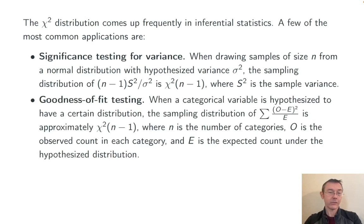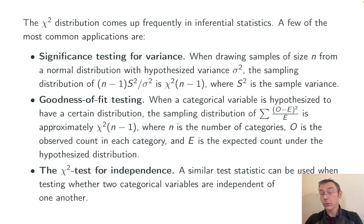Goodness of fit testing. When a categorical variable is hypothesized to have a certain distribution, the sampling distribution of Σ(O-E)²/E is approximately χ²(n-1), where n is the number of categories, O is the observed count in each category, and E is the expected count under the hypothesized distribution. I have a video on this, I'll throw that up top. Also chi-squared test for independence, and that's a very similar sort of test as goodness of fit testing.